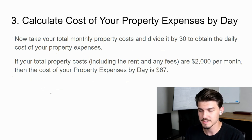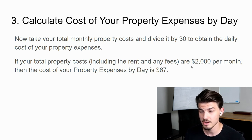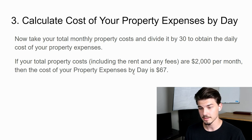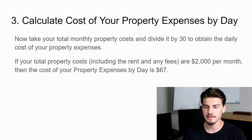Next, calculate the cost of your property expenses by day. Take the total monthly property costs and divide by 30 to obtain the daily cost. If your total property costs including rent and fees are $2,000 a month, then the daily cost is $67 — simply $2,000 divided by 30. This cost fluctuates depending on where you're at, but $2,000 a month is a fair number. This includes your utilities, internet, rent, and any other additional costs, so you know exactly what it's costing you out of pocket every single day you're leasing the property.